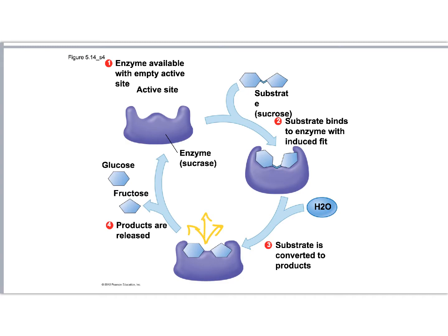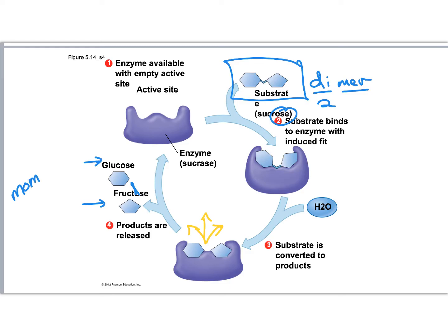We've changed our substrate. Originally we had sucrose — a dimer, two parts linked together. Now that we've broken those bonds, it's not the same anymore. The bond that held the two parts together is gone. Now what we have is glucose and fructose — two new kinds of monomers, meaning single units.